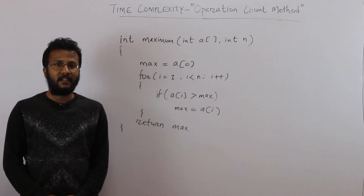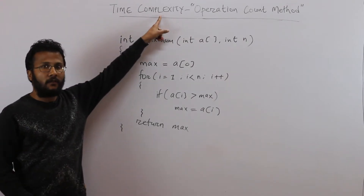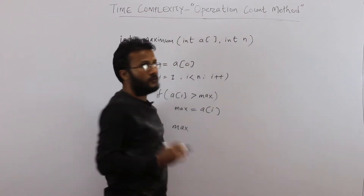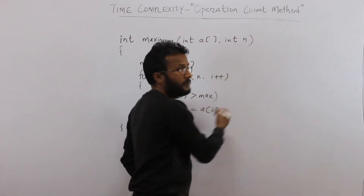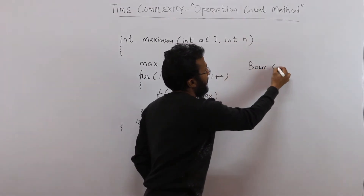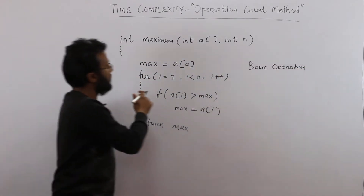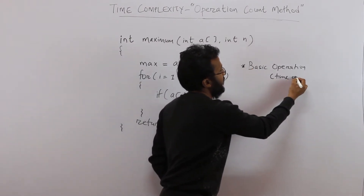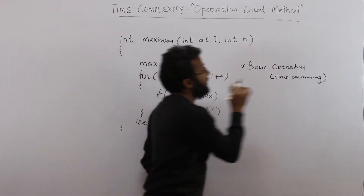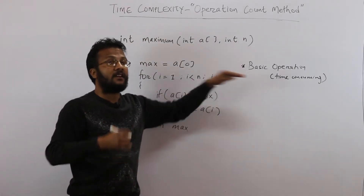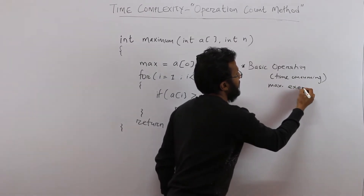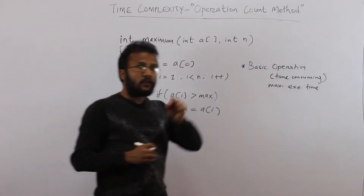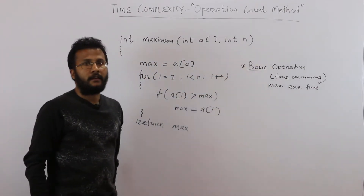In this video lecture we are going to learn how to measure the time complexity of an algorithm using the operation count method. In this method, first we need to identify the most important operation, also called the basic operation. We have to identify the operation which is the most time-consuming — the one that takes maximum execution time out of all the operations.